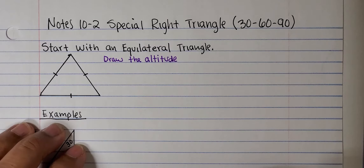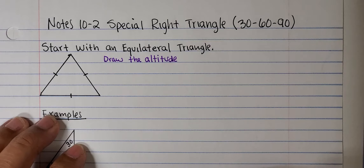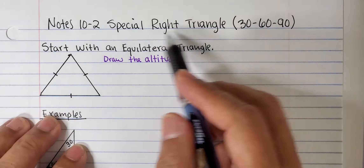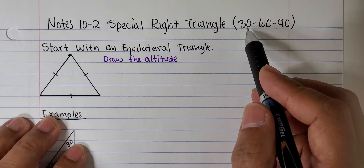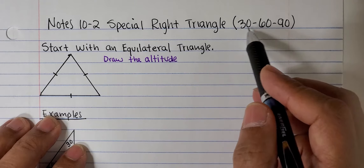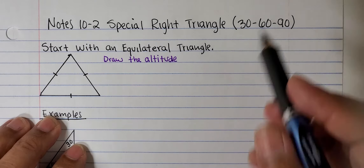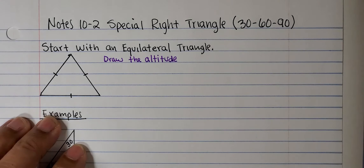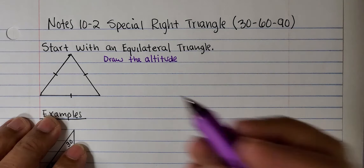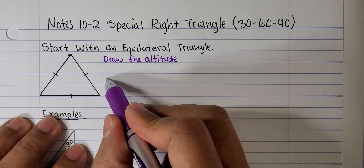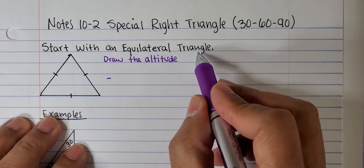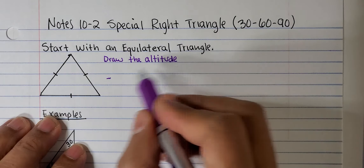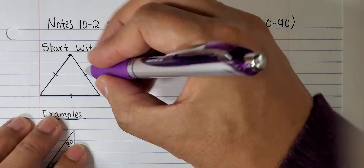This is the second part of video lesson 10-2 on special right triangles. Now we are going to discuss 30-60-90 special right triangles.